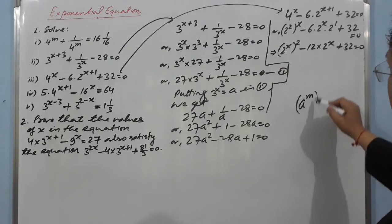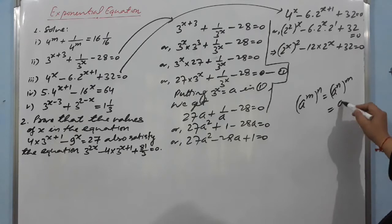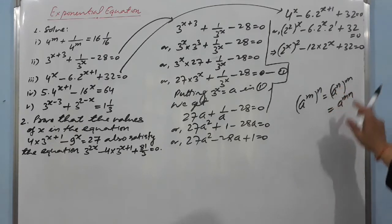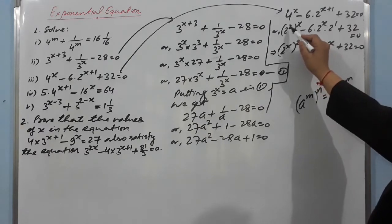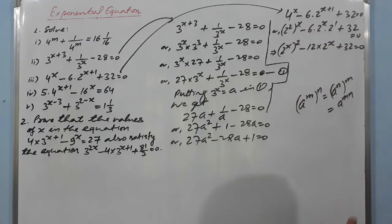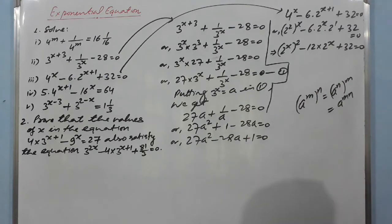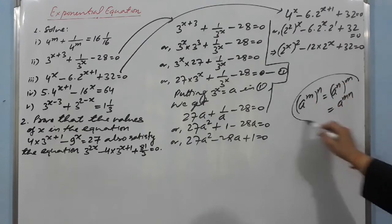By the law of indices, (a^m)^n = a^(mn). So 2^(2x) = (2^x)². That's why I write 2^x whole raised to power 2. Don't confuse: it is (2^x)² not 2^(x²). When you have this form, the powers get multiplied, giving us (2^x)² as needed.